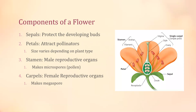So the components of the flower — let's first talk about sepals. These protect the developing buds. As you can see in this diagram, they are the green leafy-looking outer layers. Their main purpose is to protect the developing buds, and they can actually do this depending on temperature.